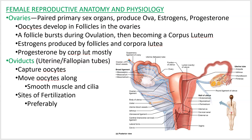This video covers female reproductive anatomy. Starting with the ovaries, which are paired organs that stay up in the body. Interestingly, if you're exposed to a lot of testosterone in the uterus because you have a Y chromosome, these structures descend and become testes. If you don't produce a lot of testosterone, those structures stay up in the body and become ovaries. So the testes and ovaries are really from the same tissues.